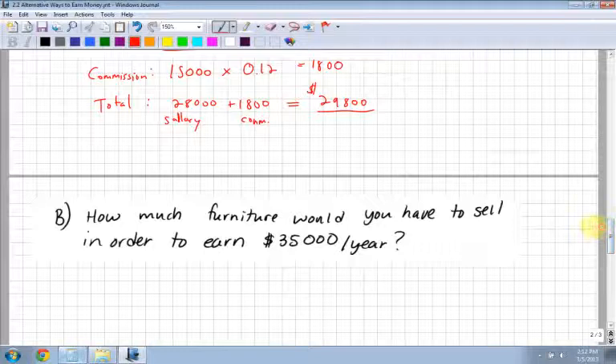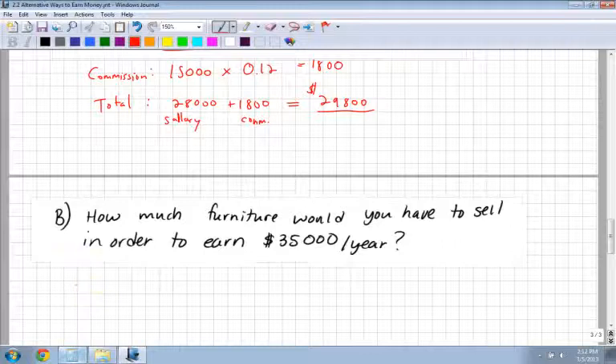How much furniture would you have to sell in order to earn $35,000 per year? This is a little bit of a more difficult type question because I want to make $35,000 per year. I know I'm already making $28,000 and plus I make 12% which is 0.12 times the amount of furniture that I sell. We'll call it F or C.